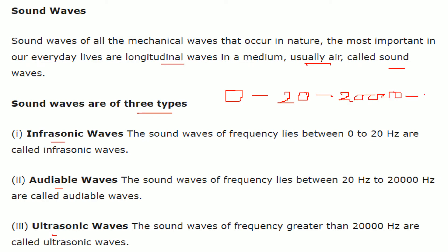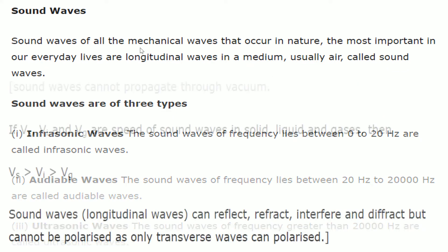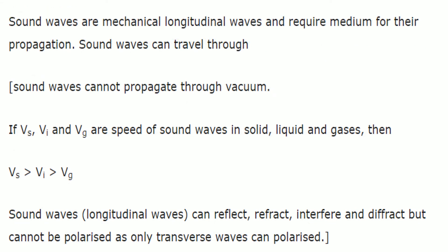If the frequency is from 0 to 20 Hz, these are infrasonic waves. From 20 Hz to 20 kHz is the audible range of human beings — these are called audible waves. Frequencies above 20 kHz are known as ultrasonic waves. Sound waves are mechanical longitudinal waves that travel in the form of rarefactions and compressions, and they require a medium for propagation.